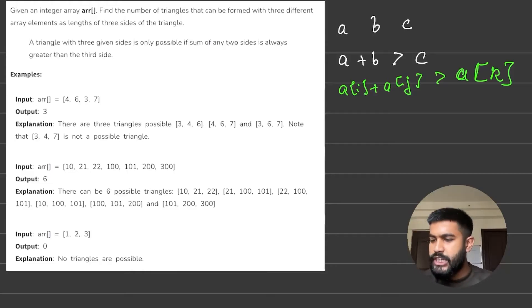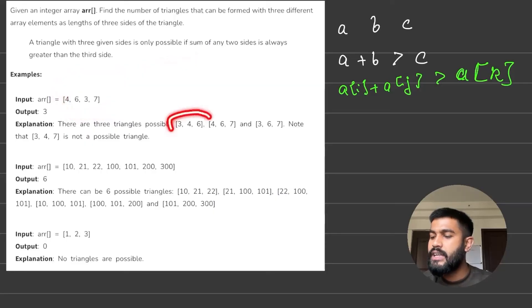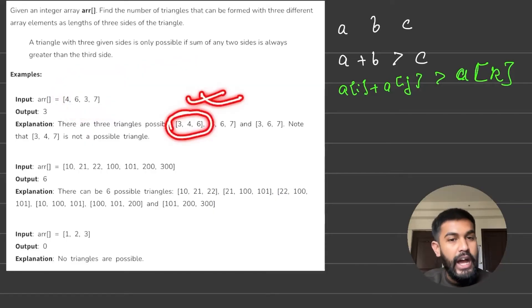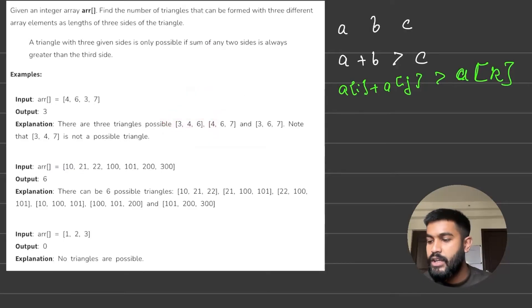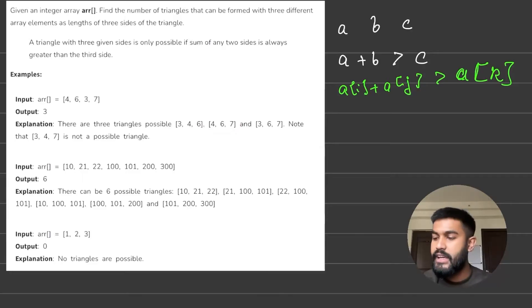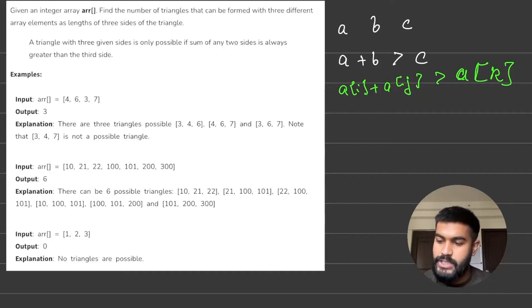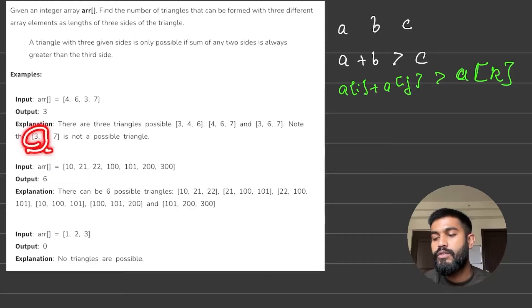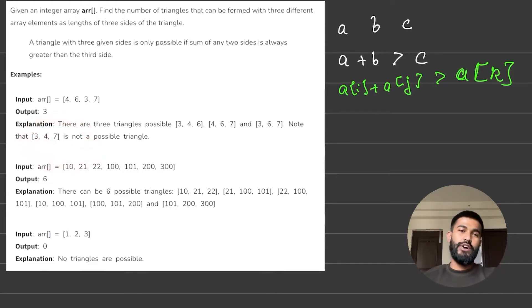Let's check the values in the first sample test case: 4, 6, 3, 7. Values 3, 4, and 6 can form a triangle because 3 plus 4 is 7, which is greater than 6. Then 4 plus 6 equals 10, which is greater than 7. And 6 plus 3 is 9, which is greater than 7. So we can form three triangles. But 3 plus 4 equals 7, which is not greater than 7, so that cannot form a triangle.